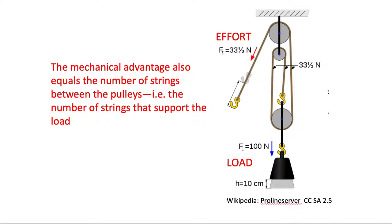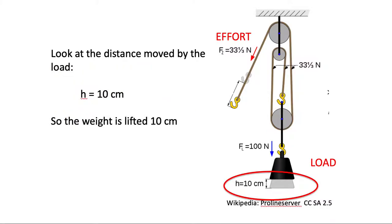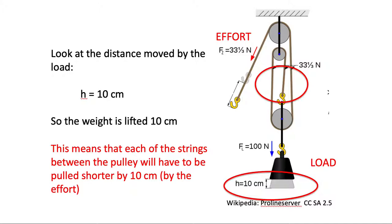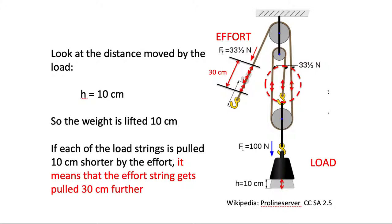Next question: we're looking at the number of strings and we want to know the distance moved. So in this diagram, the h is 10 centimeters. We're lifting it 10 centimeters. So each of the strings between the pulleys will go up 10 centimeters. So that means that the effort, the rope on the left side of the pulley system here, has to extend by 30 centimeters to lift the load by 10.